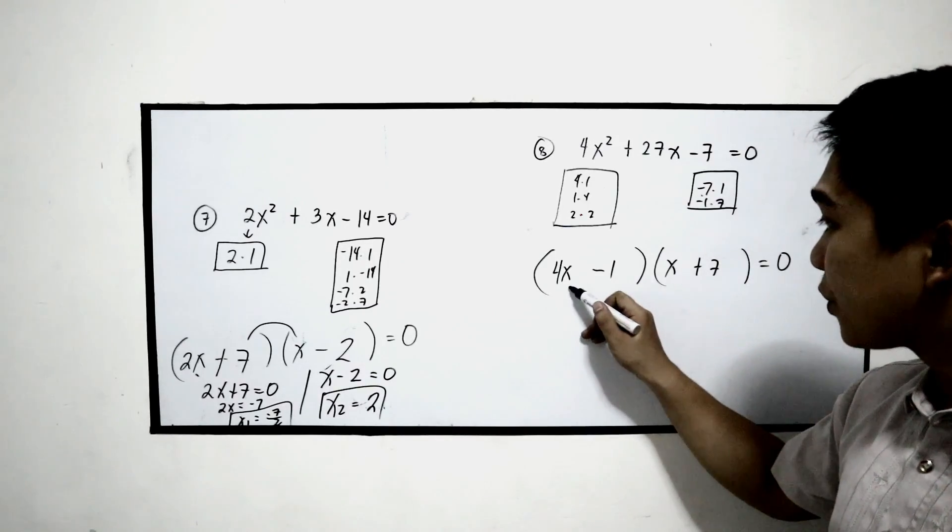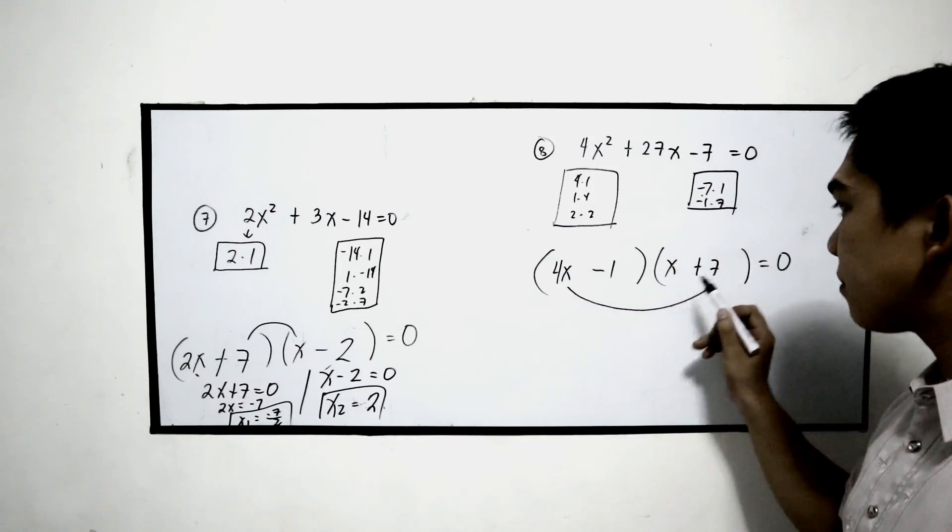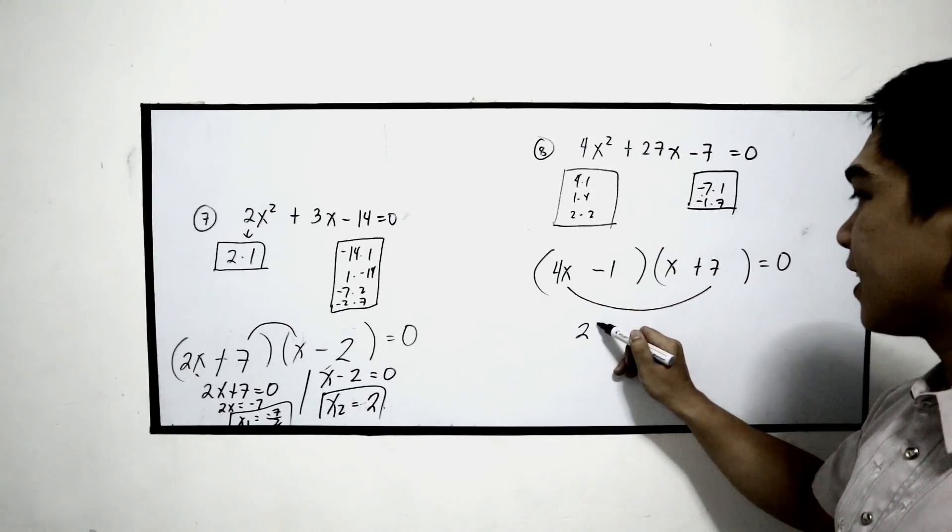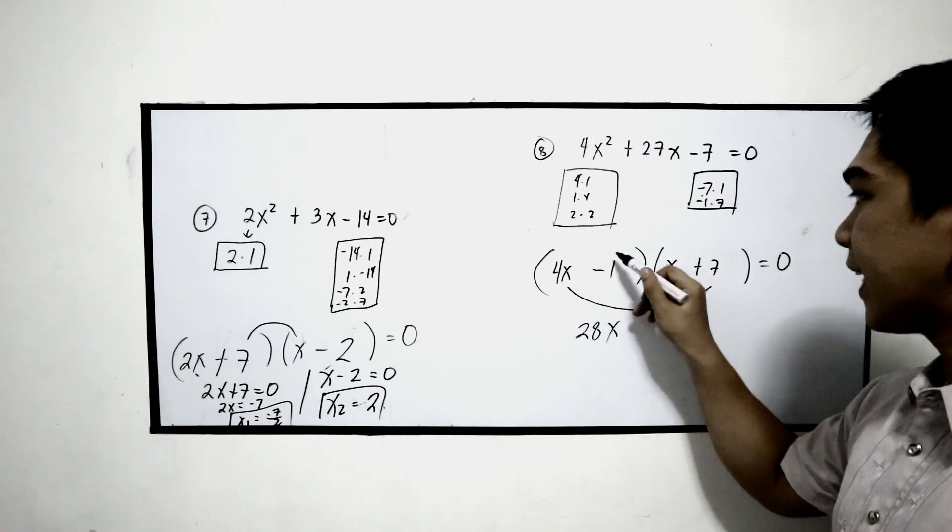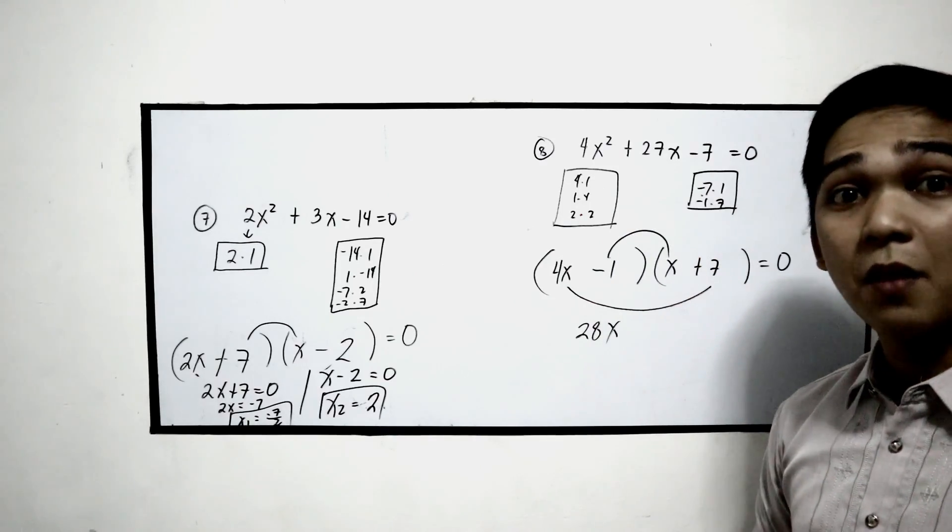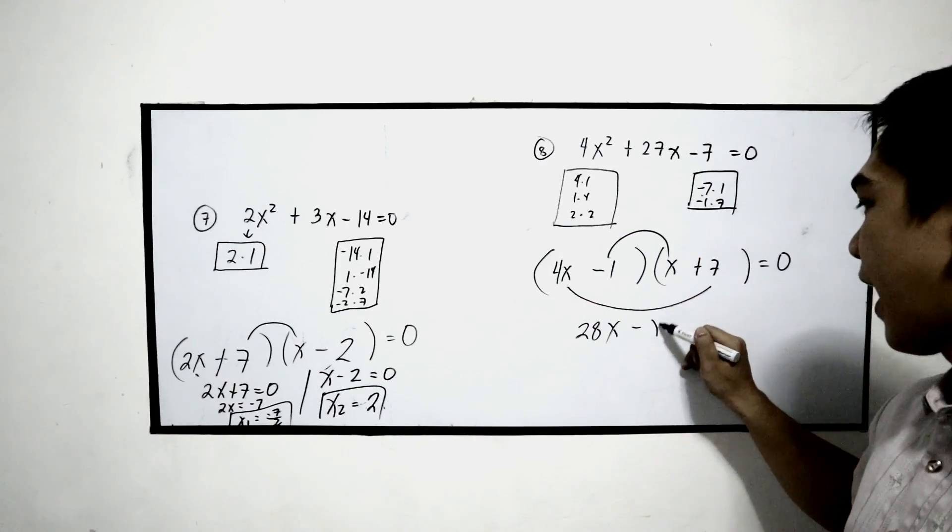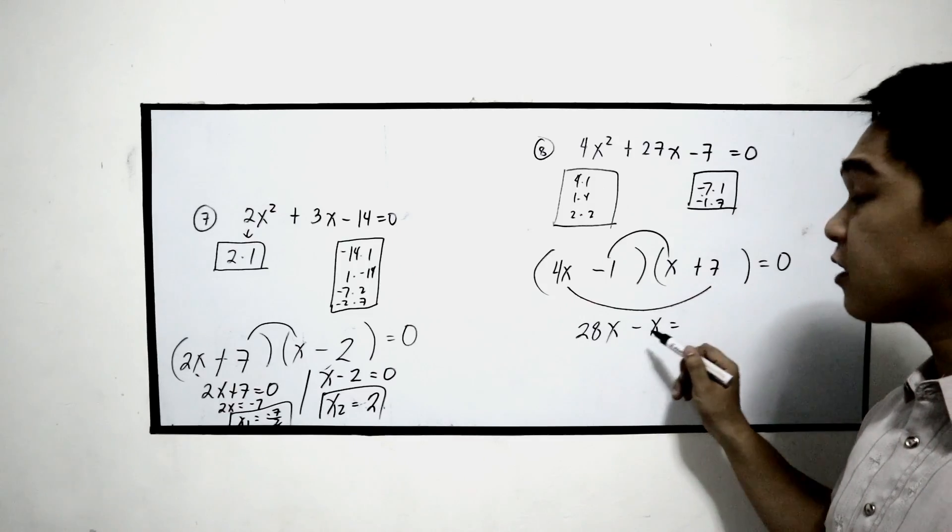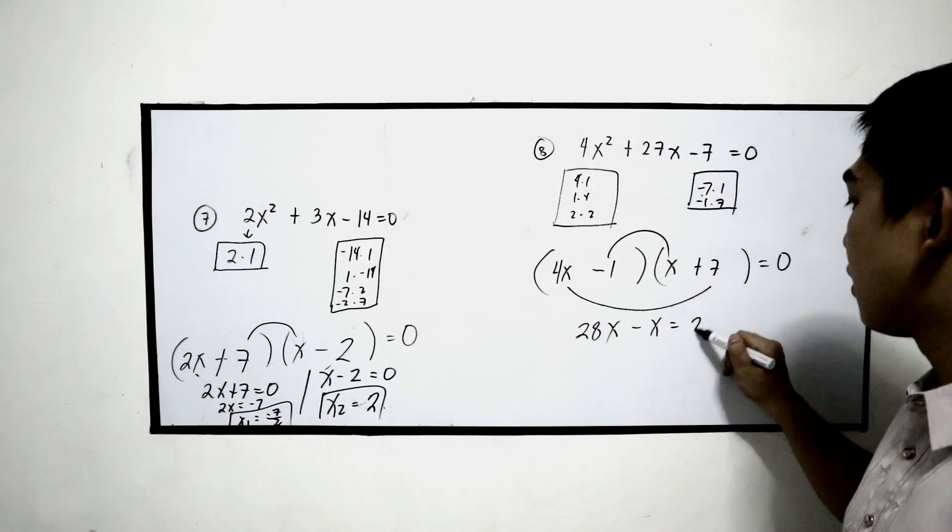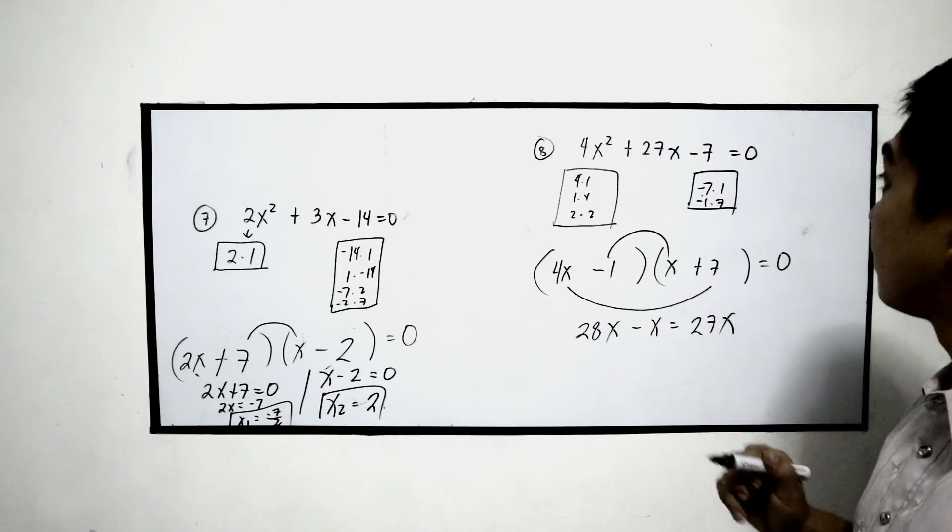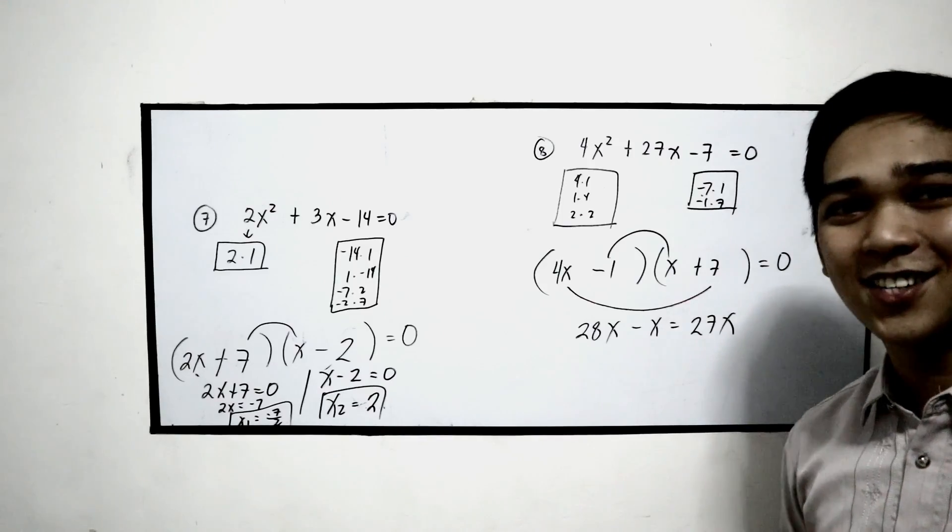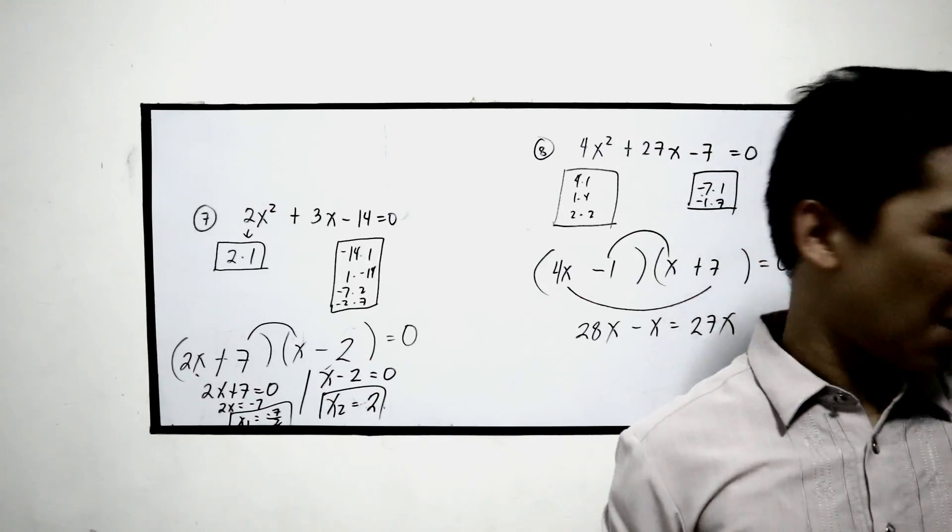Now, let us check. Outer to outer, 4x times 7, 28x. Inner to inner, negative 1 times x, negative x. 28x minus x, that is 27x. Are they the same? Yes. That means our factors are correct.